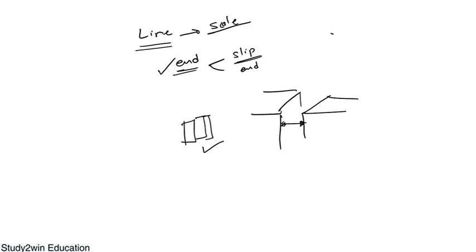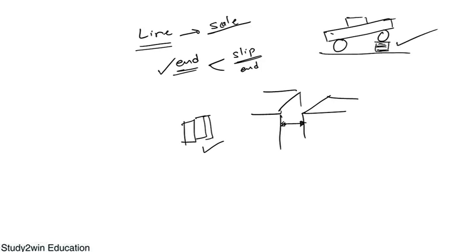Another use is a sine bar. In the case of a sine bar, we use the slip gauge to find the angle of tapered components. Under the tapered component, we keep the slip gauge block under one of the rollers of the sine bar. You will also find slip gauges used in the case of comparators, where a dial gauge is used and we have to check the dimensions of different parts — we set the dial gauge by keeping the slip gauge block under it. So there are many uses of a slip gauge.